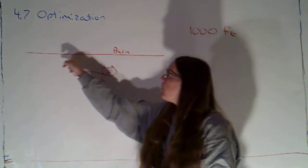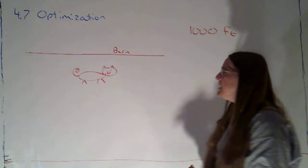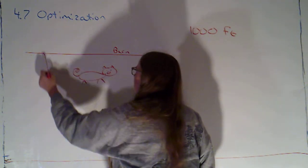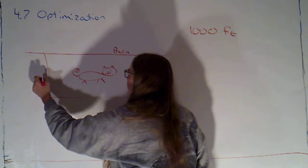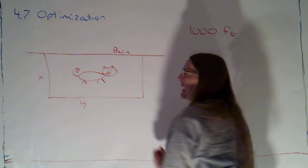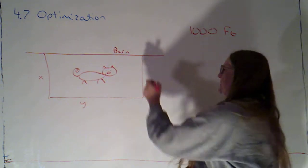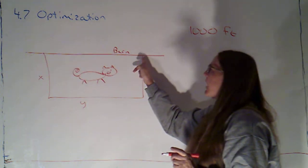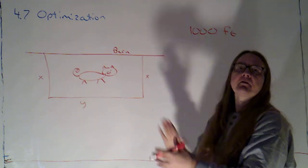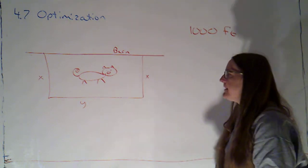She's going to take advantage of this very long barn. She's going to make one side of the enclosure against the barn, so that she only has to build the other three sides.